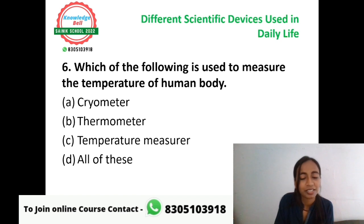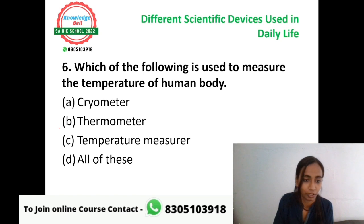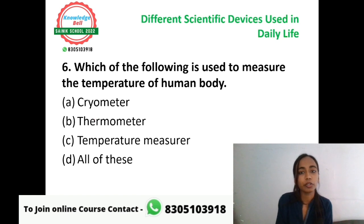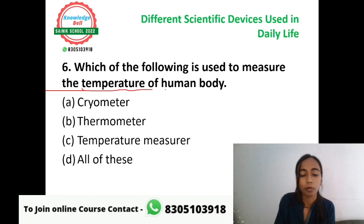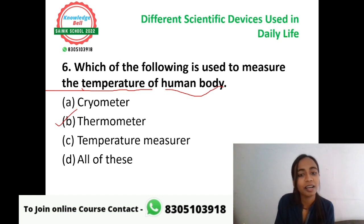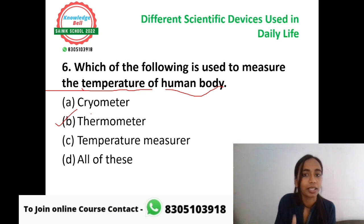Question number six: which of the following is used to measure the temperature of the human body? Options are A: cryometer, B: thermometer, C: temperature measure, or D: all of these. The correct answer is option B, thermometer. Thermometer is the device used to measure the temperature of the human body. Now, cryometer was also used for temperature measurement, but not for the human body — cryometer is used to measure very low temperatures, such as negative temperatures in polar areas.